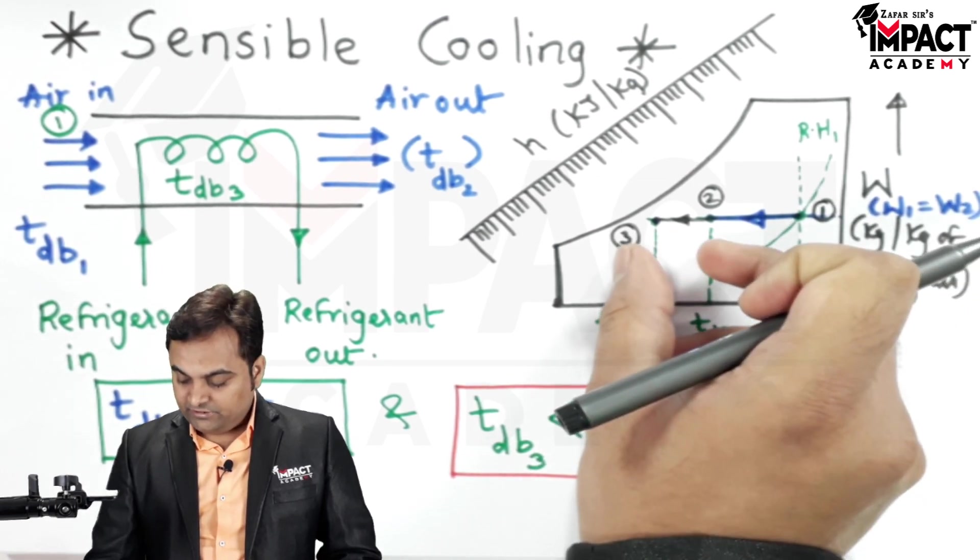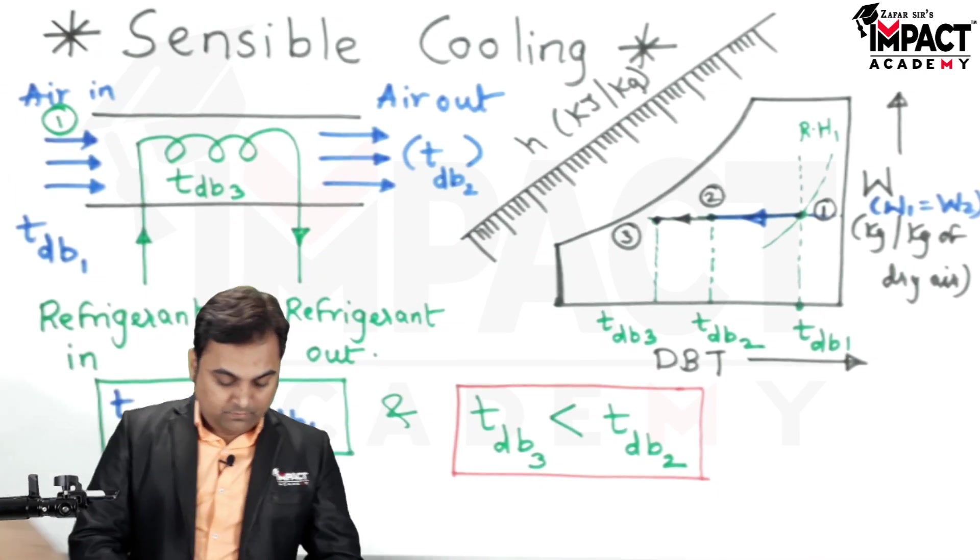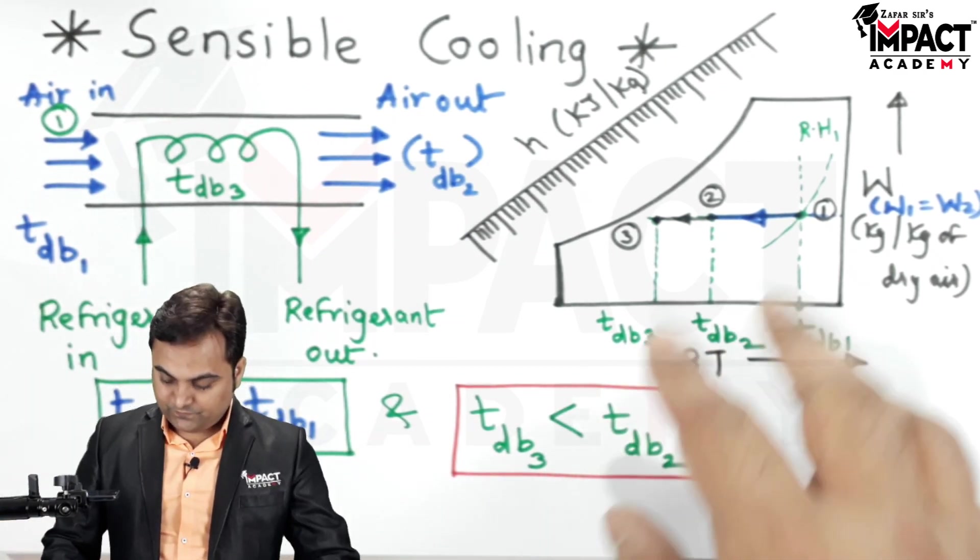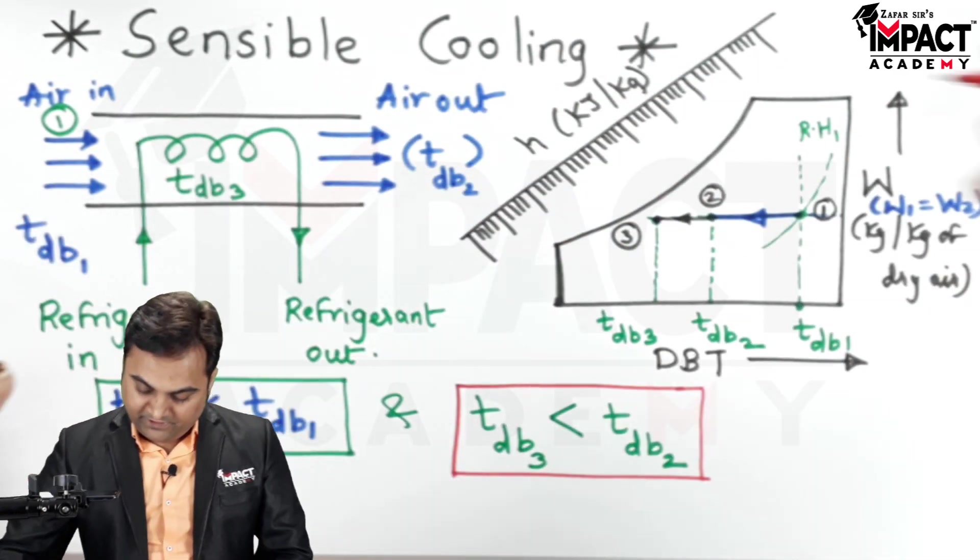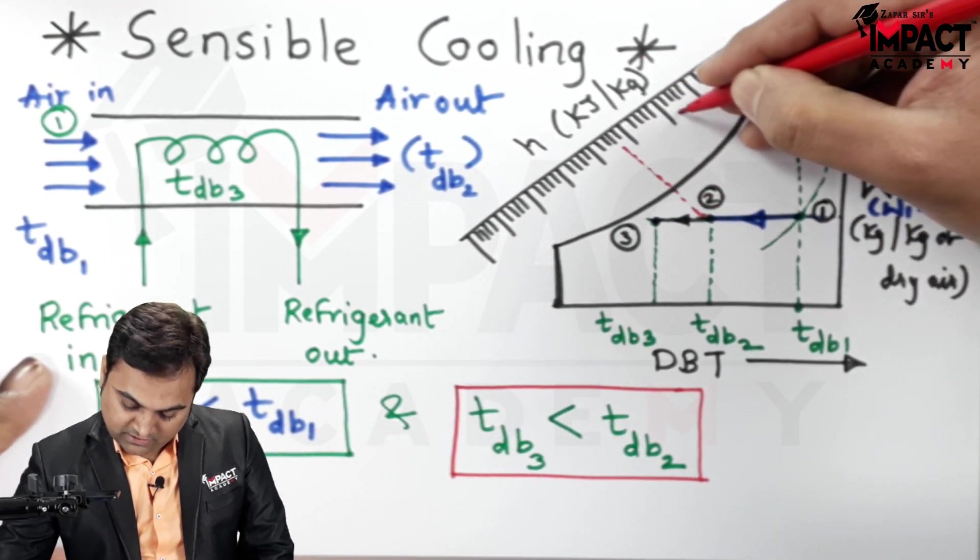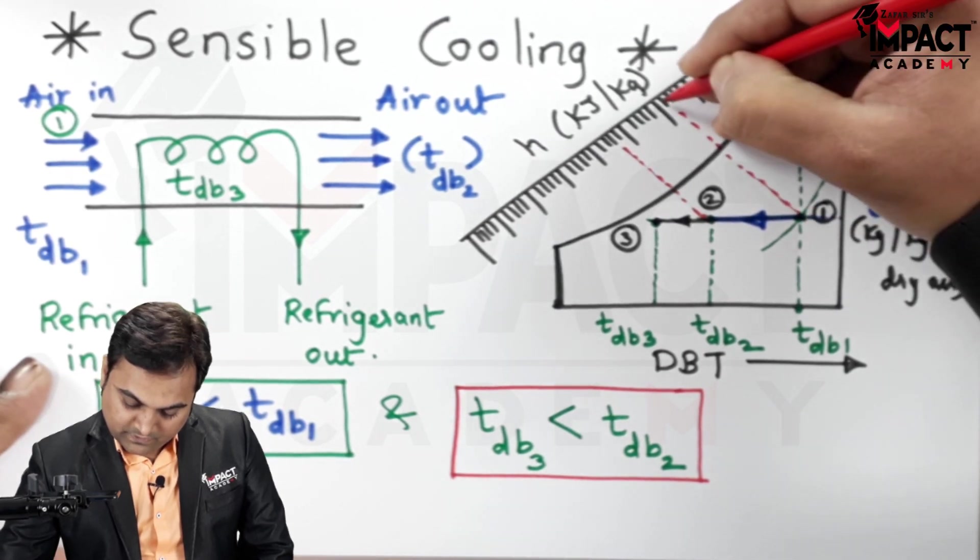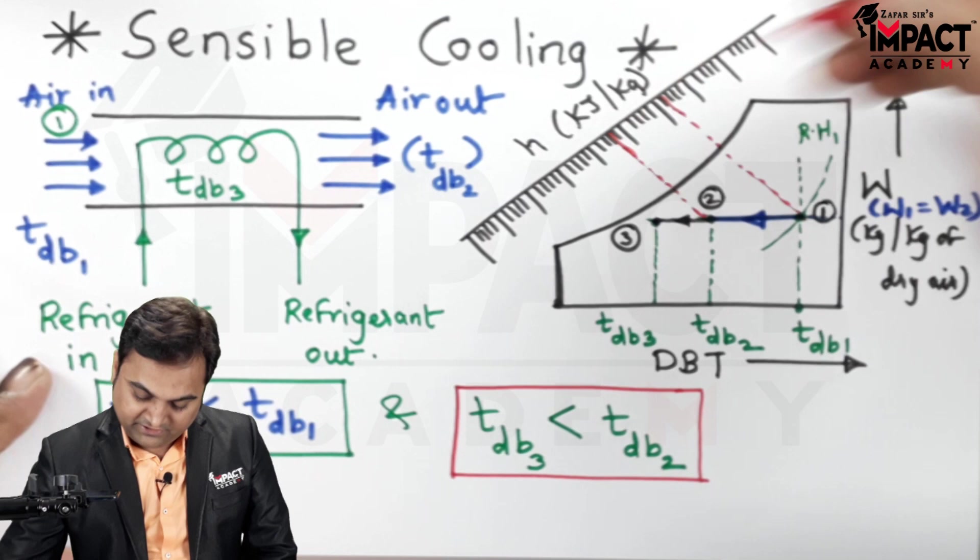Then plotting these points on the specific enthalpy line, and these lines are the wet bulb temperature lines plotted onto the specific enthalpy lines.